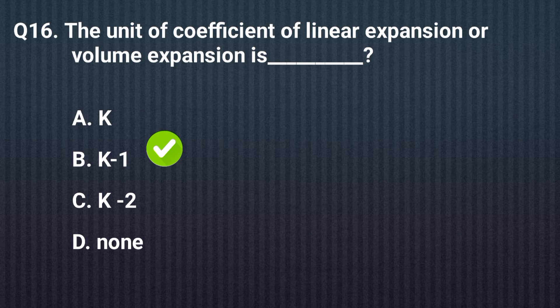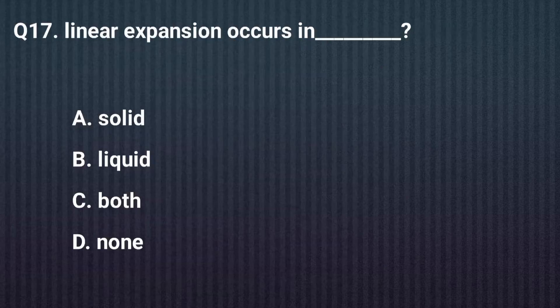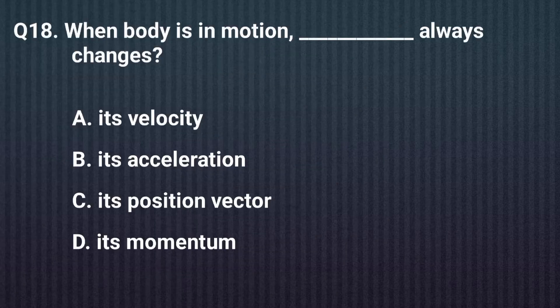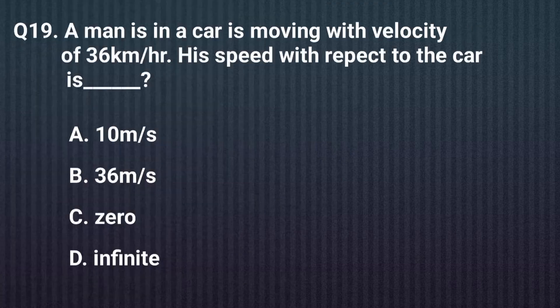Question seventeen. Linear expansion occurs in — the right answer is option A: Solid. Question eighteen. When a body is in motion, it always changes — the right answer is option C: its position vector. Question nineteen. A man in a car moving with a velocity of 36 km/h has a speed with respect to the car — the right answer is option C.